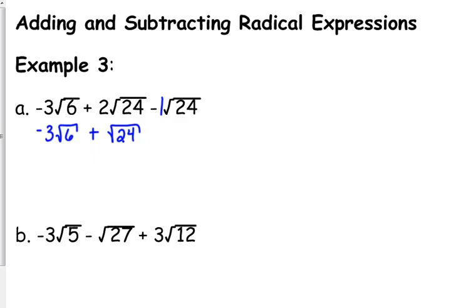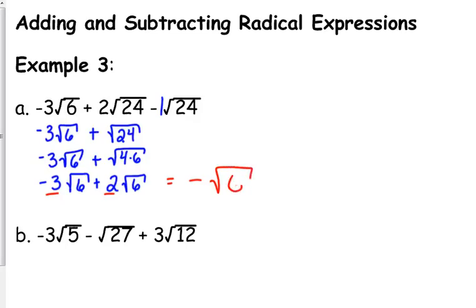Now, it would be great if we could put these two expressions together. Well, we can, because the square root of 24 can be rewritten as two square roots of 6. Because 4 times 6 is 24, the square root of 4 is 2. Now, they have the same radical. We can combine their coefficients, negative 3 plus 2. That leaves us with just the negative square root of 6.